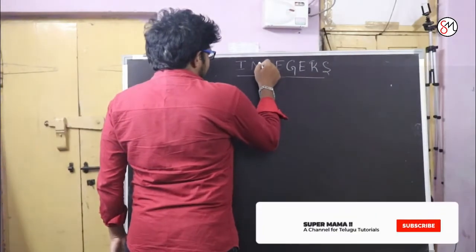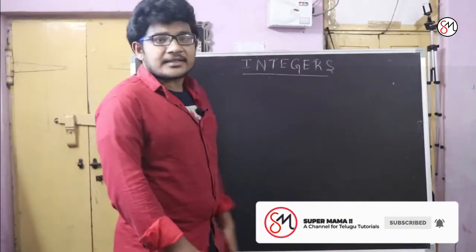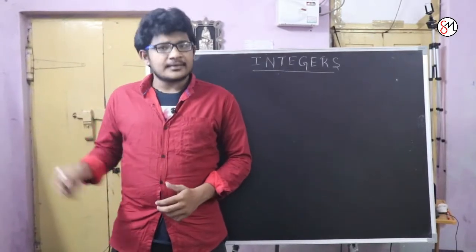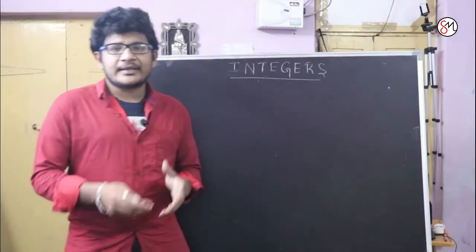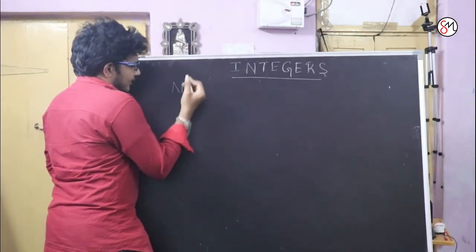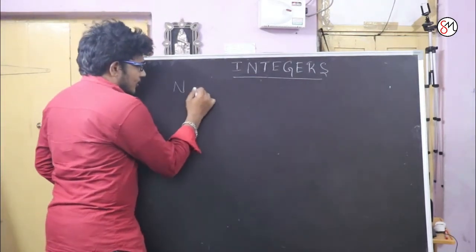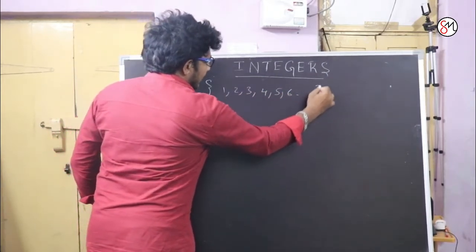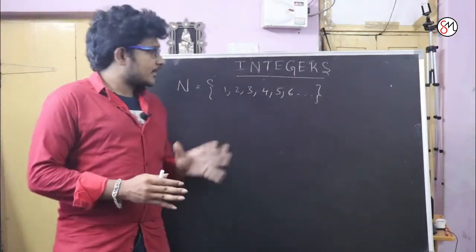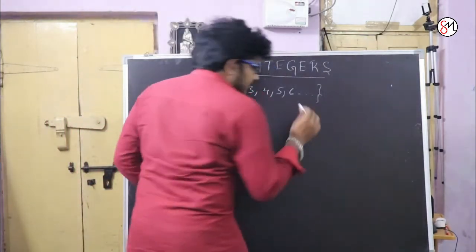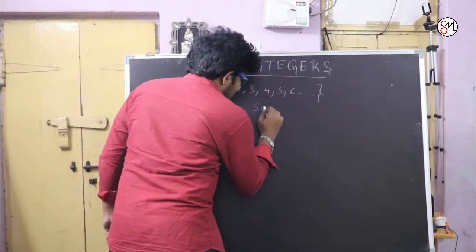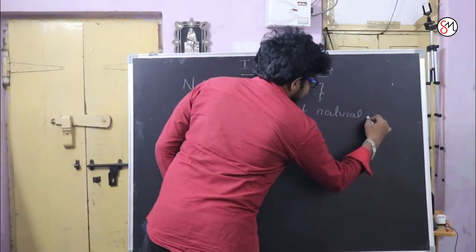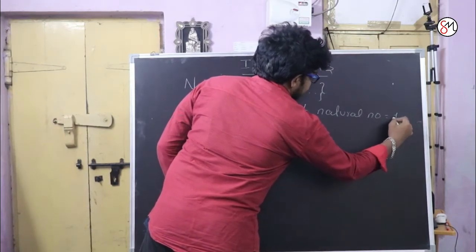We are going to discuss about integers. Integers is nothing but counting numbers. If we have some objects, we will count 1, 2, 3, 4, 5, 6, 7, 8, 9, 10. So we will count. N is natural numbers, denoted by N. N is equal to 1, 2, 3, 4, 5, 6, and so on. The smallest natural number is 1.